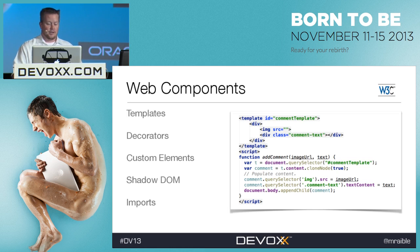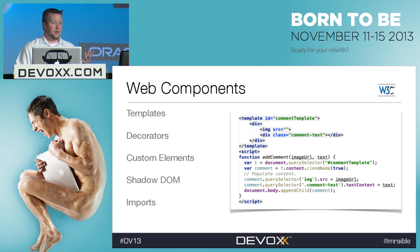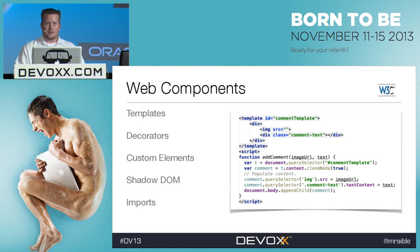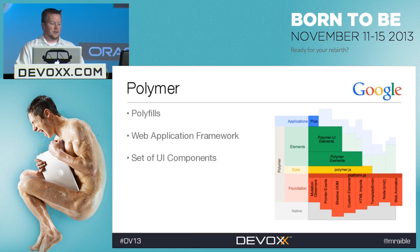Decorators apply templates based on CSS selectors. Custom elements — like the field tag we've been using with Angular — let you define your own elements. There are also browser-native components like a calendar component coming out that browsers will execute and render, so you don't have to do it in your HTML. Shadow DOM encapsulates a DOM subtree for more reliable composition, and imports define how templates and decorators are packaged and loaded as a resource. These will only be in the latest browsers, but that's motivation to get your managers to allow the latest technologies.